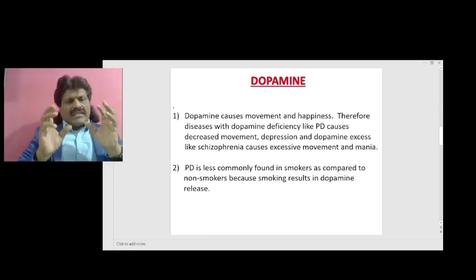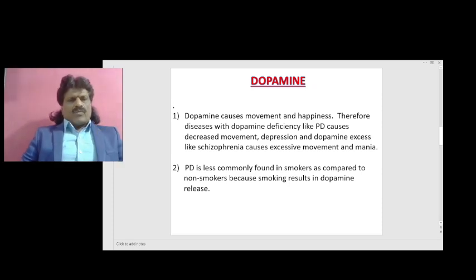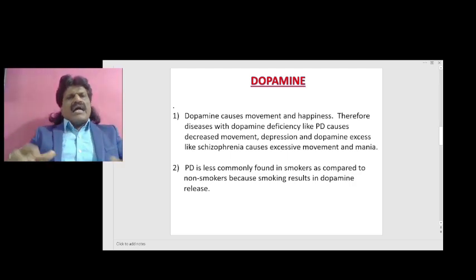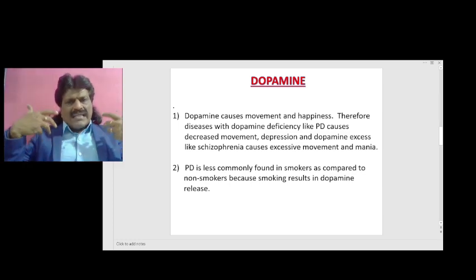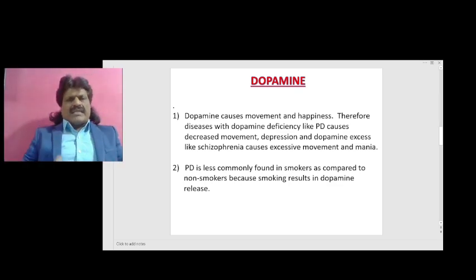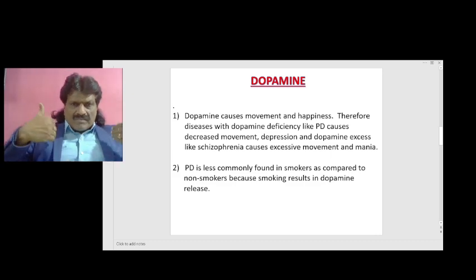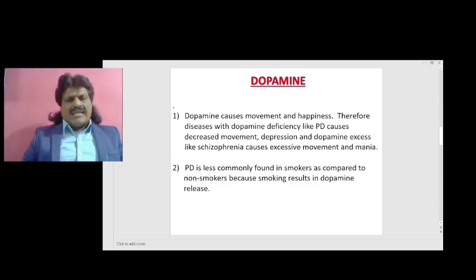For movement disorders, dopamine, the neurotransmitter, plays a very important key role. Dopamine basically causes movement kinesia, and it is also a happy hormone resulting in happiness. Therefore, diseases with dopamine deficiency like Parkinson's disease cause decreased movement — that is hypokinesia — and a decrease in the level of happiness, that is depression. At the other end of the spectrum, dopamine excess like in schizophrenia causes excessive movement to the extent of becoming violent, and excessive happiness resulting in mania.